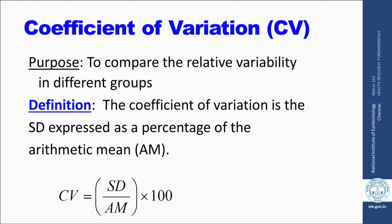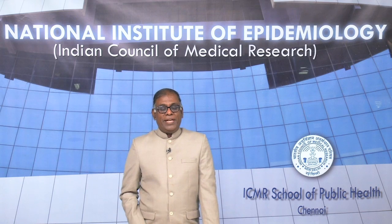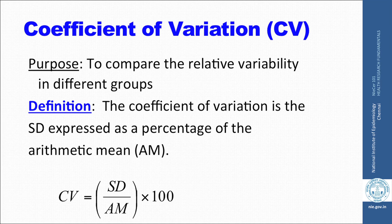One more measure is the coefficient of variation (CV). Its purpose is to compare relative variability across different groups or datasets. CV is the standard deviation expressed as a percentage of the arithmetic mean: (SD / mean) × 100. Since both SD and mean share the same units, the units cancel, giving a pure number expressed as a percentage.